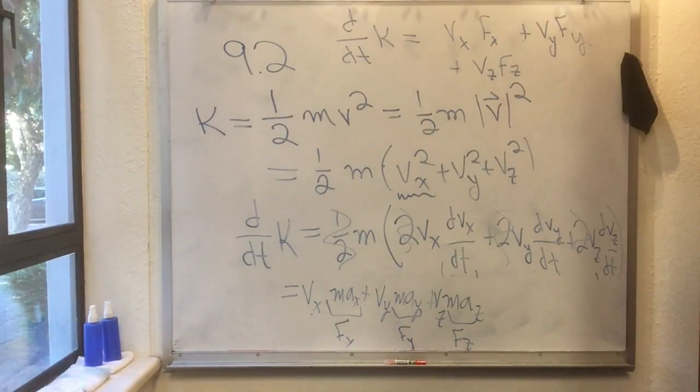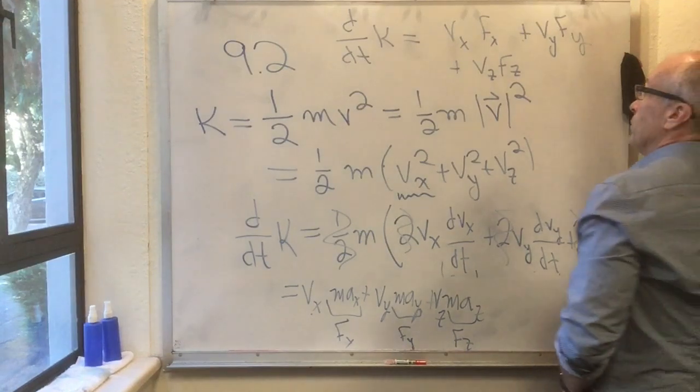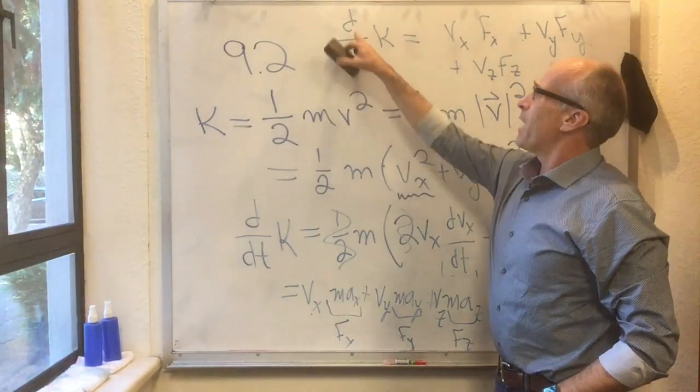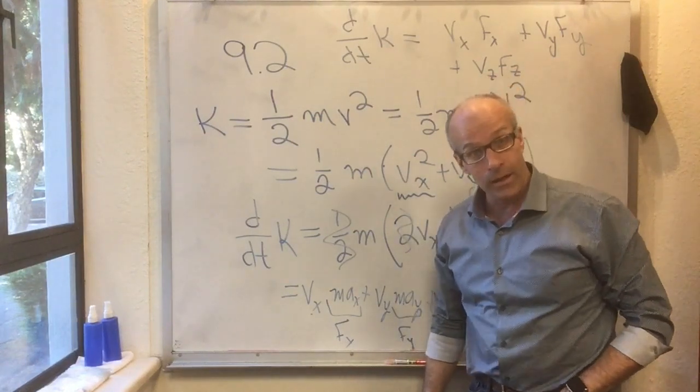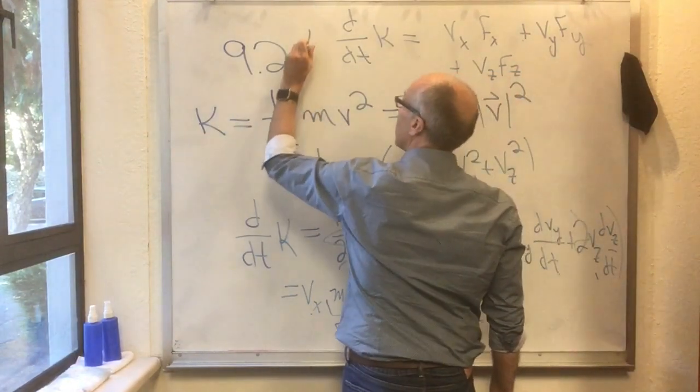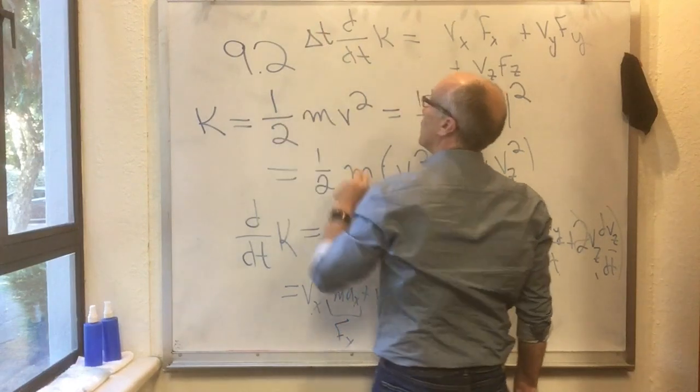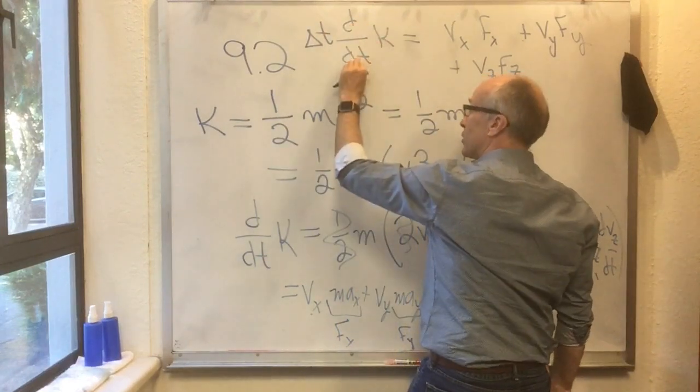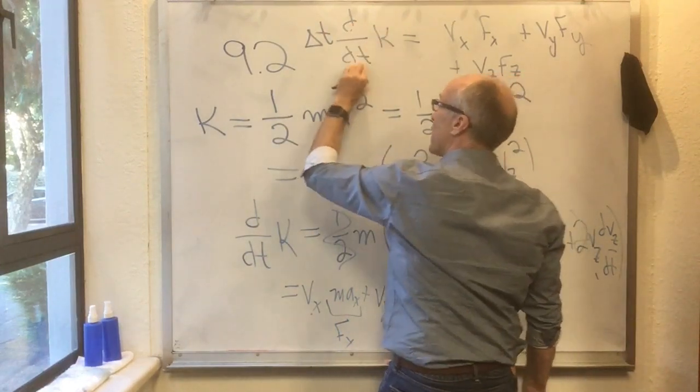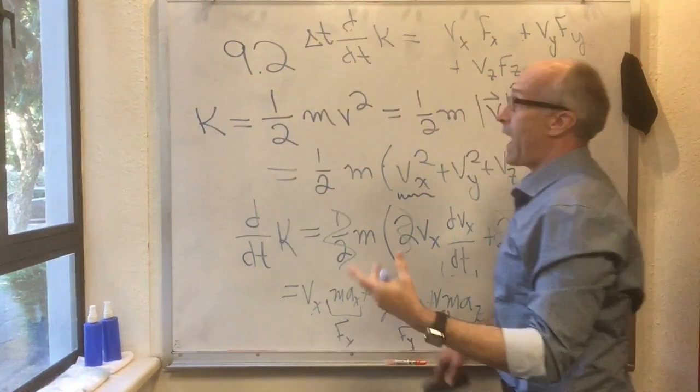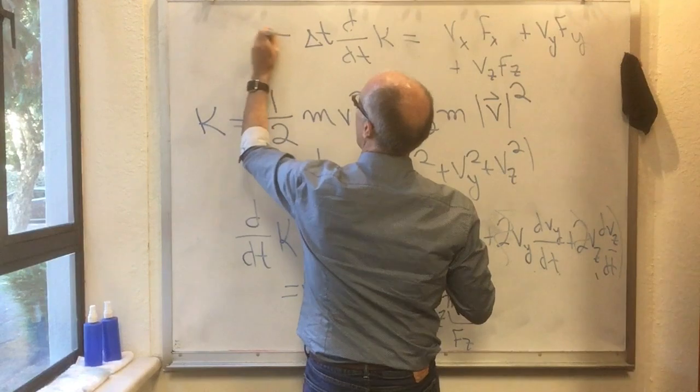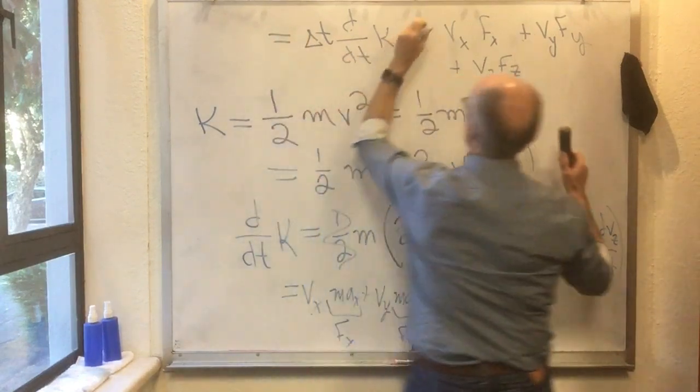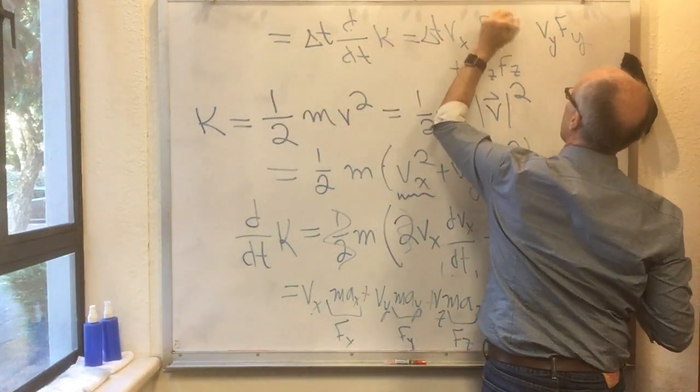Now the next thing I want to do: this is the time derivative of k. If that's the time derivative and I wait a little time delta t, that's its time rate of change times the amount of time that's elapsed—that's how much it's changed. So if I multiply both sides by delta t, I have a new interpretation.